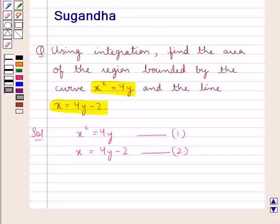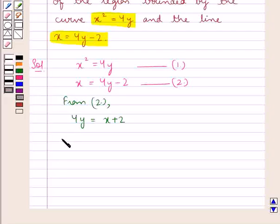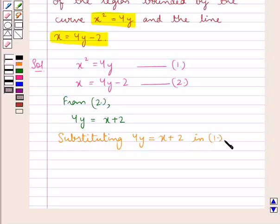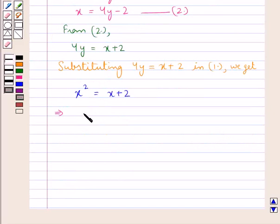Next we find the point of intersection of the curve and the line. From equation 2 we have 4y equal to x plus 2. Substituting into equation 1 we get x squared equal to x plus 2, which gives us x squared minus x minus 2 equal to 0.